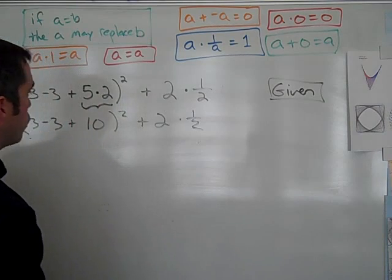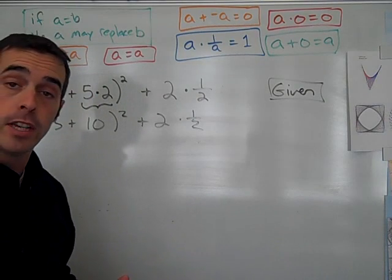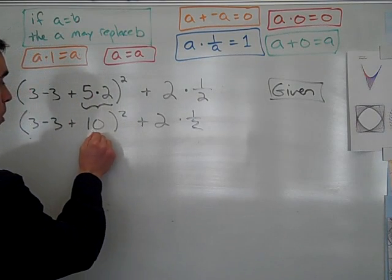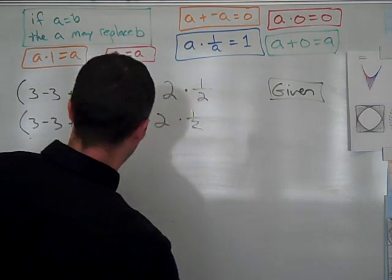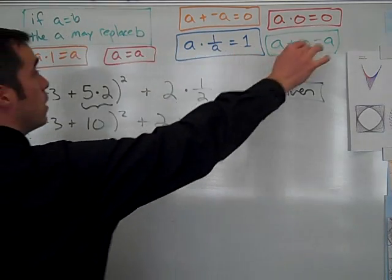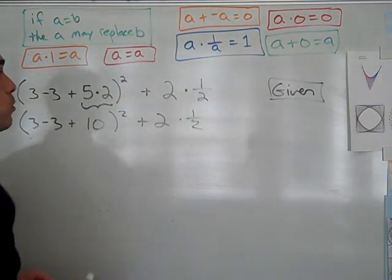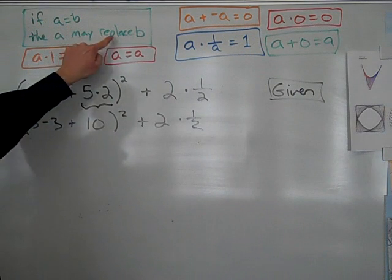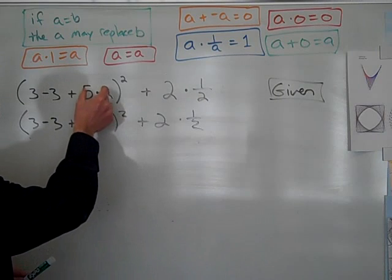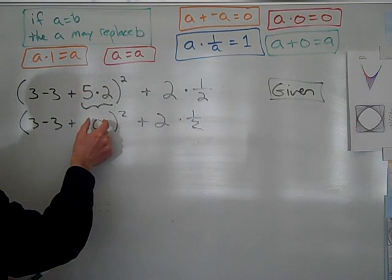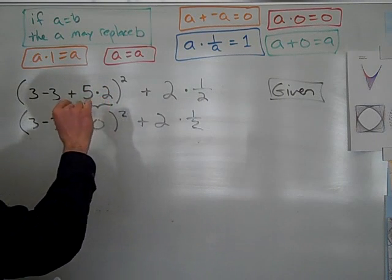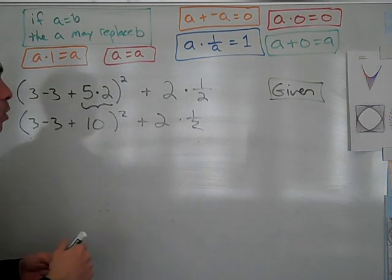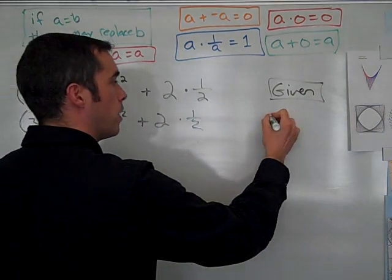And then I'll give justification for why I'm allowed to take 5 times 2 out of the problem and replace it with a 10. Now as I look in my different properties of algebraic equality, I see one that says, if A equals B, then A may be replaced by B. That's called the substitution property, and I am substituting an equal expression for an equal term. So over here, I'll write substitution.